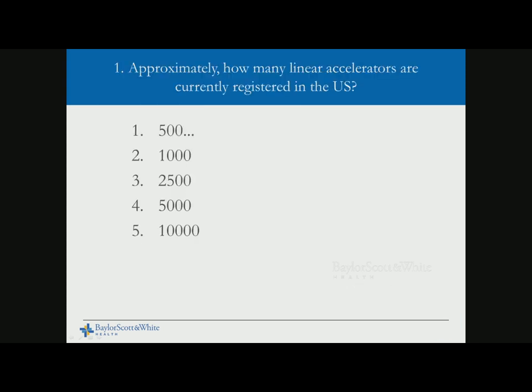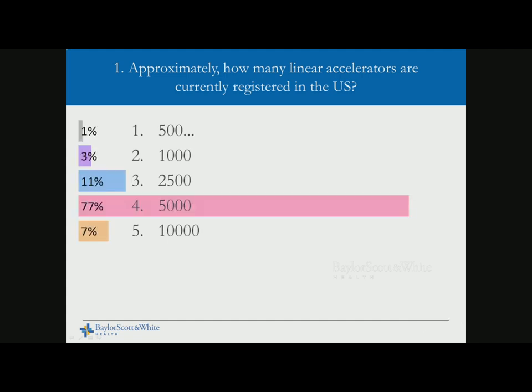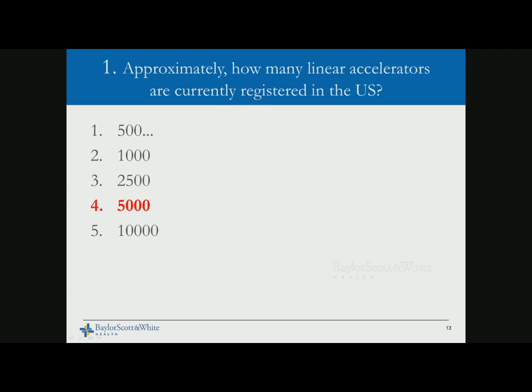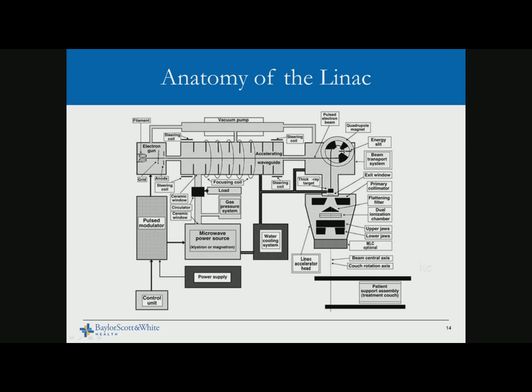SAM question: Approximately how many linear accelerators are currently registered in the U.S.? The options are 500, 2,500, 5,000, and 10,000. The correct answer is about 5,000 LINACs.